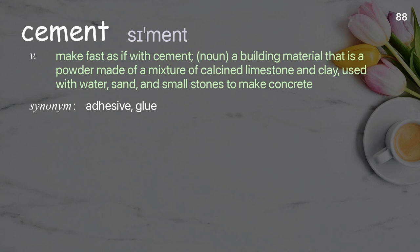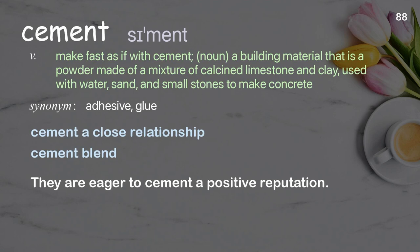Cement: A building material that is a powder made of a mixture of calcined limestone and clay, used with water, sand, and small stones to make concrete. Verb: to make fast as if with cement. Examples: Cement a close relationship. Cement blend. They are eager to cement a positive reputation.